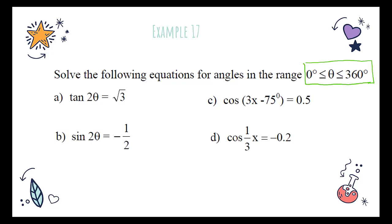This question is slightly different from what we have done before. In our previous examples, we only worked with questions involving theta. Now, in example 17, we have angles such as 2θ, (3x − 75), and ⅓x. So we are going to see how to answer this type of question.